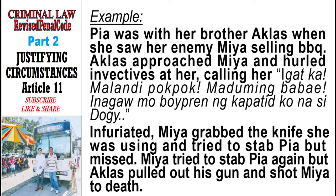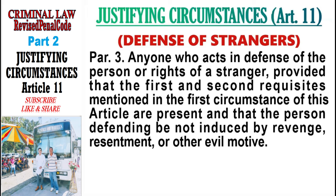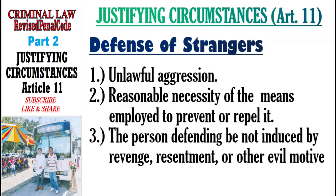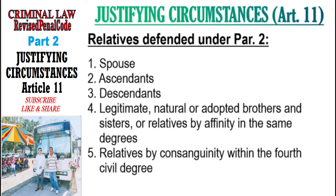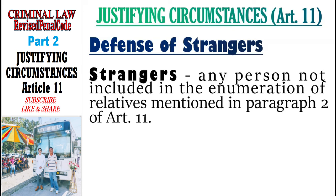Let us now discuss defense of strangers under Paragraph 3. The elements are: unlawful aggression; reasonable necessity of the means employed to prevent or repel it; and the person defending must not be induced by revenge, resentment, or other evil motive. Strangers are any person not included in the enumeration of relatives under Paragraph 2 of Article 11. For example, a live-in partner or common law spouse is considered a stranger, so defending them falls under defense of stranger, not defense of relative.